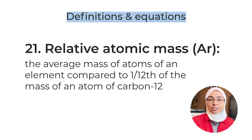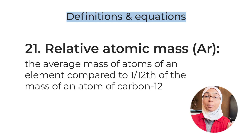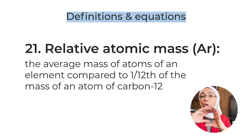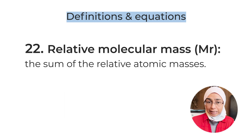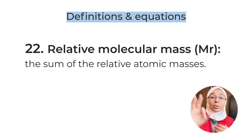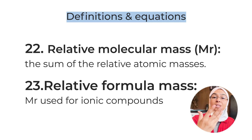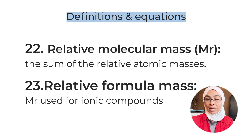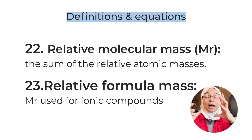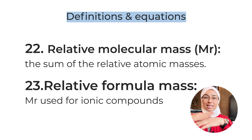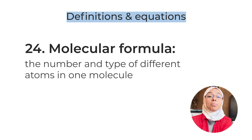Definition number twenty-one: relative atomic mass — the average mass of atoms of an element compared to one-twelfth of the mass of an atom of carbon-12. This has appeared as both a written and multiple choice question. Definition number twenty-two: relative molecular mass — the sum of the relative atomic masses of all atoms in a molecule. Definition number twenty-three: relative formula mass — the sum of the relative atomic masses of all atoms, used for ionic compounds because ionic compounds are not molecules and do not form individual units.